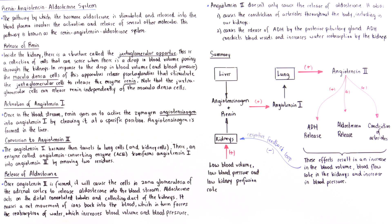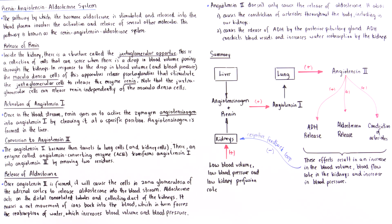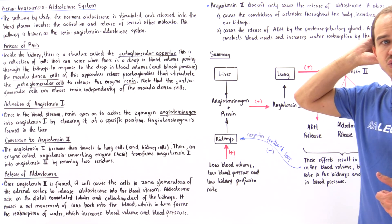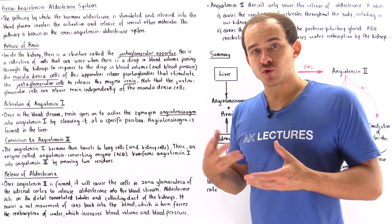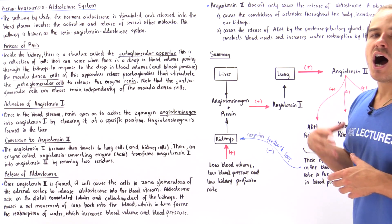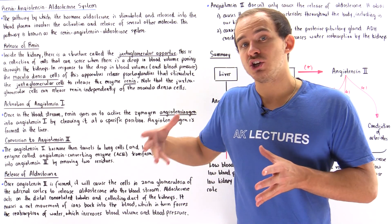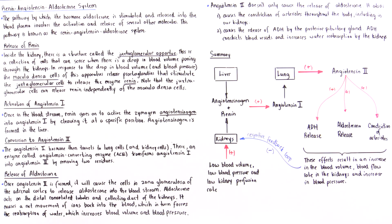Angiotensin II also directly constricts our blood vessels, increasing blood pressure. More specifically, it causes constriction of arterioles throughout the body as well as inside our kidneys. When blood pressure and blood volume increase, this creates a negative feedback loop that causes the juxtaglomerular cells to stop releasing renin.